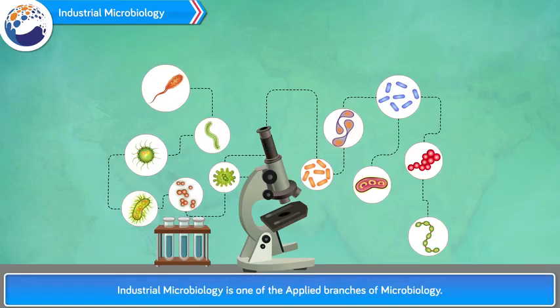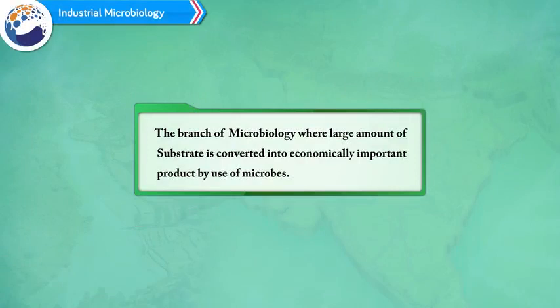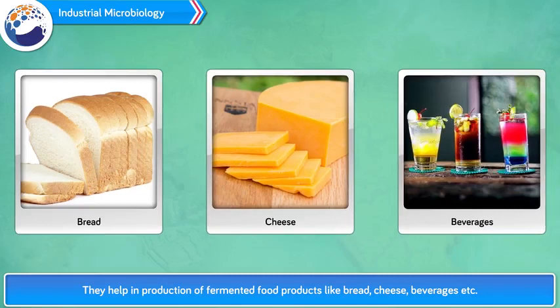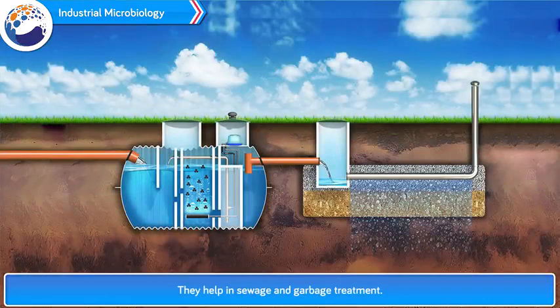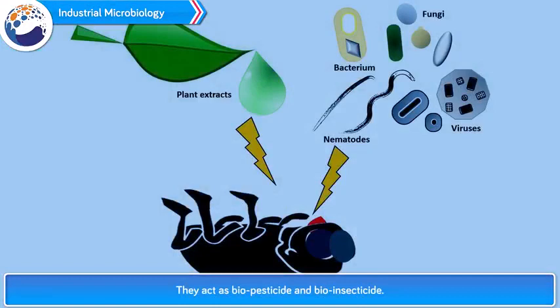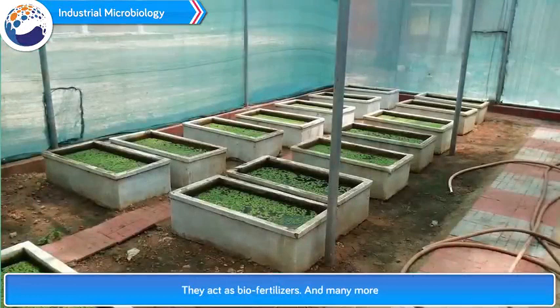Industrial Microbiology is one of the applied branches of microbiology. It is defined as the branch of microbiology where a large amount of substrate is converted into an economically important product by use of microbes. The important features of microbes are: 1. They help in production of fermented food products like bread, cheese, beverages, etc. 2. They help in vaccine and antibiotic production. 3. They help in sewage and garbage treatment. 4. They help in pollution control. 5. They help in preparation of biofuel. 6. They act as biopesticide and bioinsecticide. 7. They act as biofertilizers, and many more.